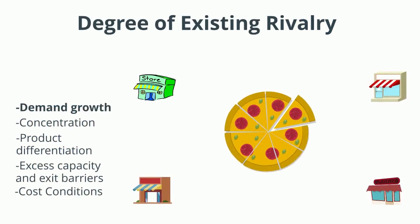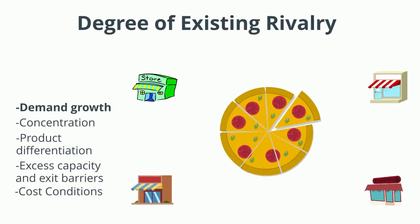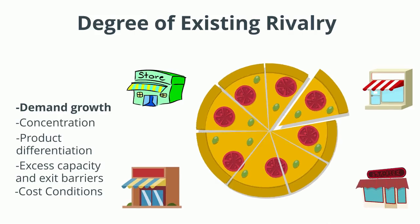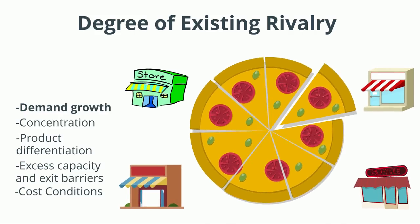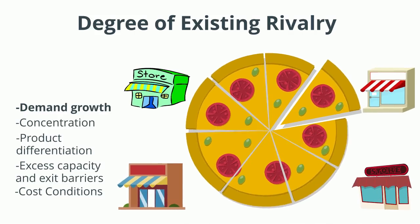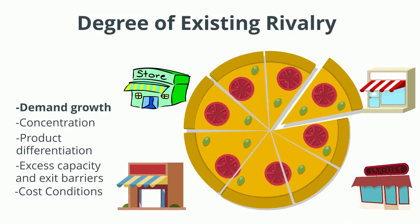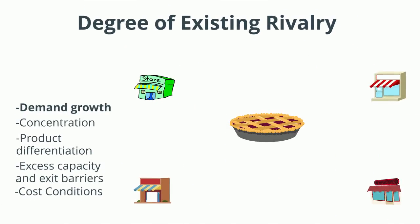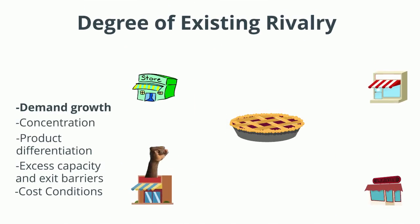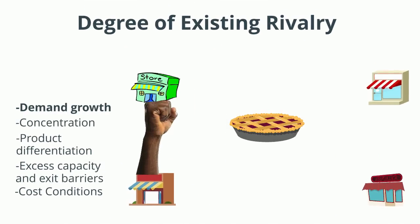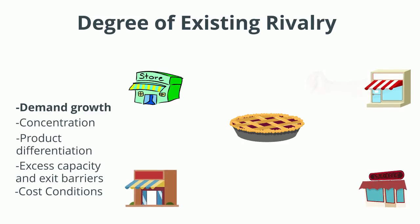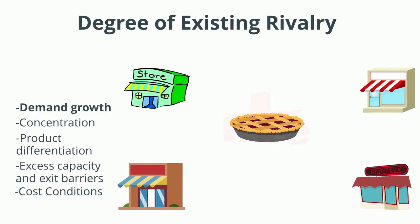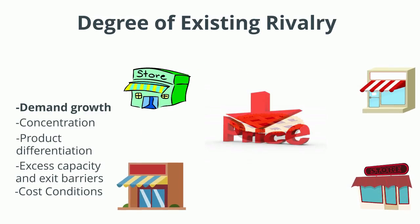Let's start with demand growth. When the whole market is growing, individual firms can grow without having to fight to take share away from each other. Thus, the rivalry might not feel very intense. On the other hand, when the market is mature or in decline, firms may have to fight to take share away from each other to grow, and that's going to put pressure on prices.